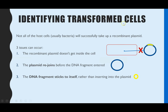So, identifying transformed cells. The reason you have to have this step is not all of the bacteria will successfully incorporate or take up the recombinant plasmid. There are three key reasons for this. The first one is the recombinant plasmid sometimes doesn't get inside the cell. Even though you've increased the permeability of the membrane, sometimes it doesn't get in - and in fact, most of the time it won't get in.